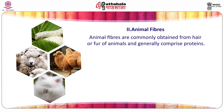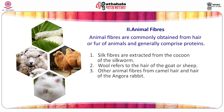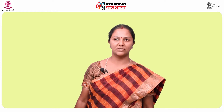Animal fibers are commonly obtained from hair or fur of animals and generally comprise proteins. Silk fibers are extracted from the cocoon of the silkworm. Wool refers to the hair of the goat or sheep. Other animal fibers come from camel hair and the hair of the angora rabbit. The last category is mineral fibers, which are naturally occurring or slightly modified fibers procured from minerals — for example, asbestos fibers.